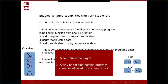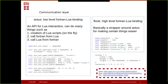We want two things: a communication layer that can send data back and forth between Fortran and Lua, and a way of defining hosting program variables that are allowed for communication — because you want to control which variables are exposed to the end user. For the communication layer, we use two libraries. One is called Iotus, a very low-level Fortran-Lua binding where you can call Lua scripts and pass stuff back and forth.